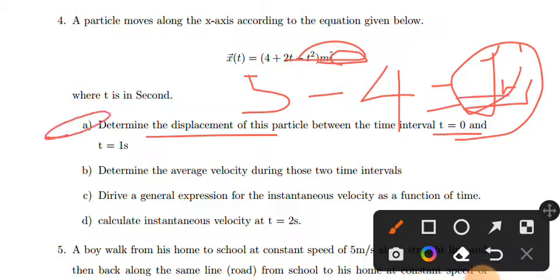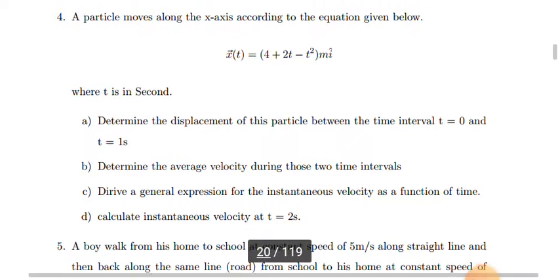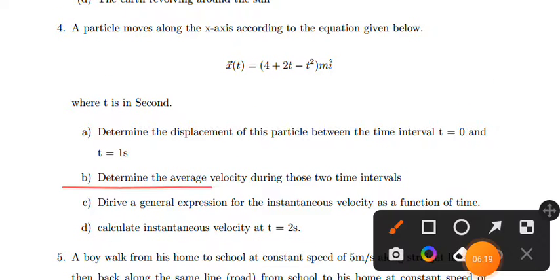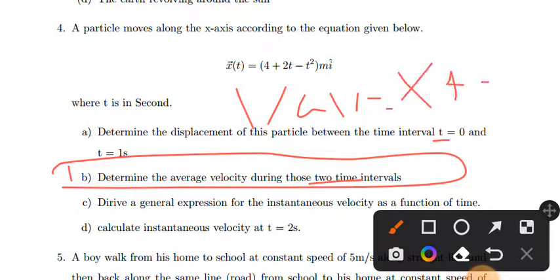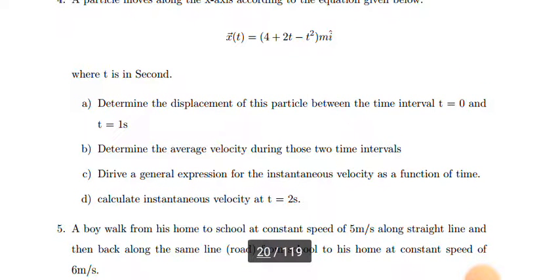Now determine the average velocity. The average velocity expression is: final position minus initial position over final time minus initial time.